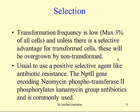Selection is needed because the transformation frequency is low. The maximal transformation frequency I've ever uncovered in any plant cell culture system is 3% — that is, 3% of the cells were actually transformed — and it's normally much, much lower than this. You may have one cell in 100,000 or one in a million transformed. These non-transformed cells will overgrow the transformed cells unless you have a means for preferentially selecting for the transformed cells, so it's usual to use a positive selective agent.